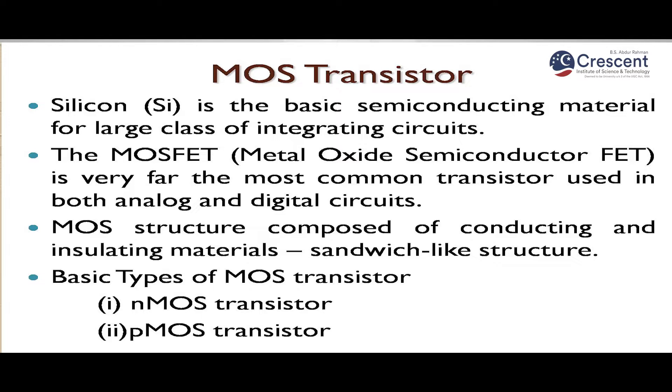The basic types of MOS transistors are NMOS and PMOS. In an NMOS transistor, the substrate is a P-type substrate, also called the bulk or body. N-plus diffusions are made to form the source and drain. Silicon dioxide acts as the insulating material, over which the polysilicon gate terminal is placed.